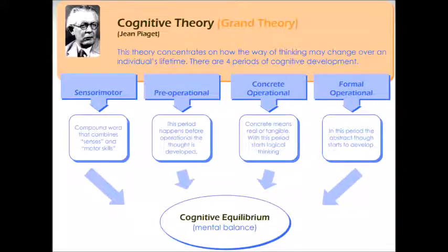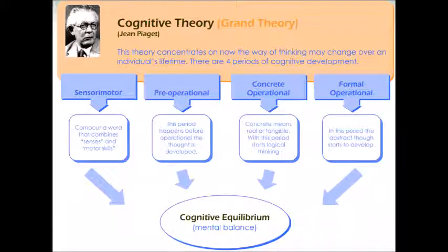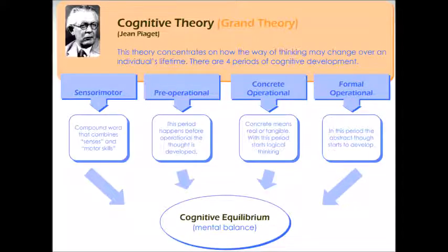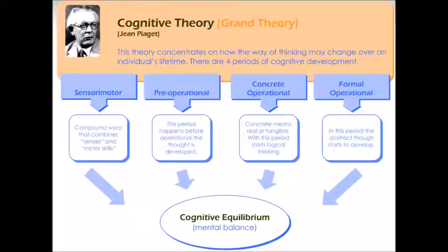All four periods affect the cognitive equilibrium or mental balance of humans. This grand theory — cognitive theory — is broader in scope and attempts to explain human behavior by understanding thought processes. The assumption is that humans are logical beings who make choices that make the most sense to them, deciding what is most effective and efficient for the best outcome.